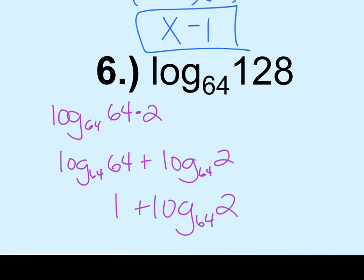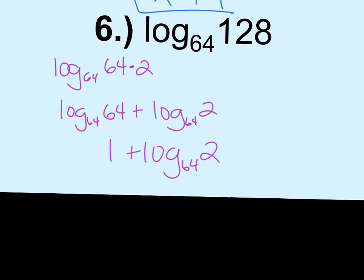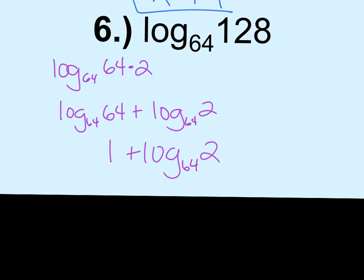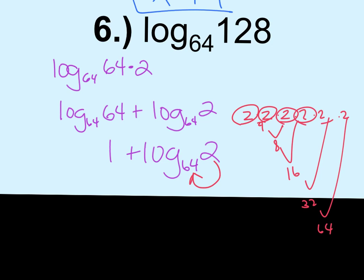And then I can even go a step further again. It's a little trickier. But if I can get 2 to the power of something to get to 64, right? 2 times 2 is 4. Times 2 is 8. Times 2 is 16. Times 2 is 32. Times 2 is 64. That was 1, 2, 3, 4, 5, 6 twos. Which means that that's the 6th root of 2.